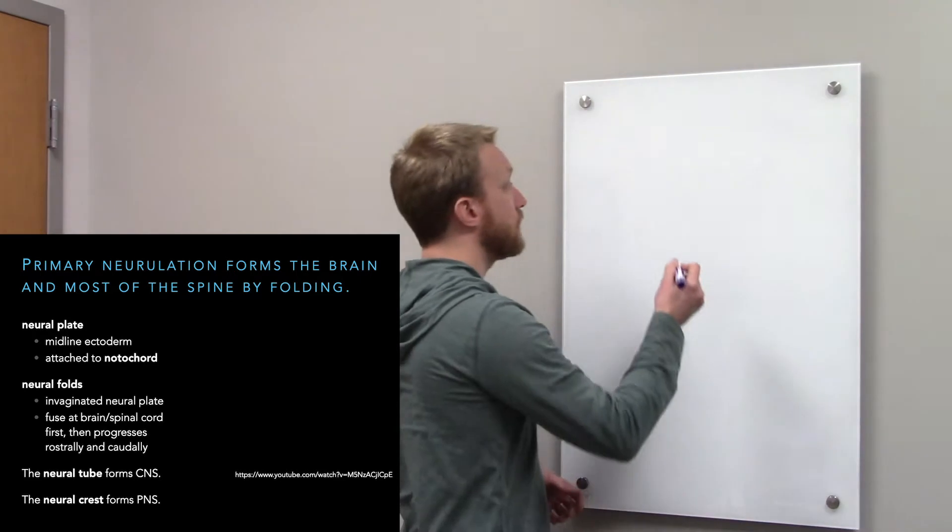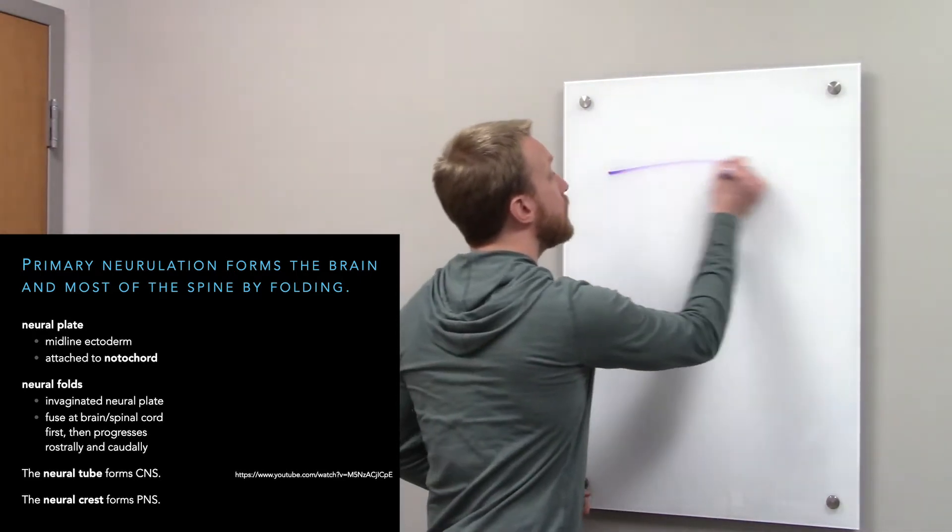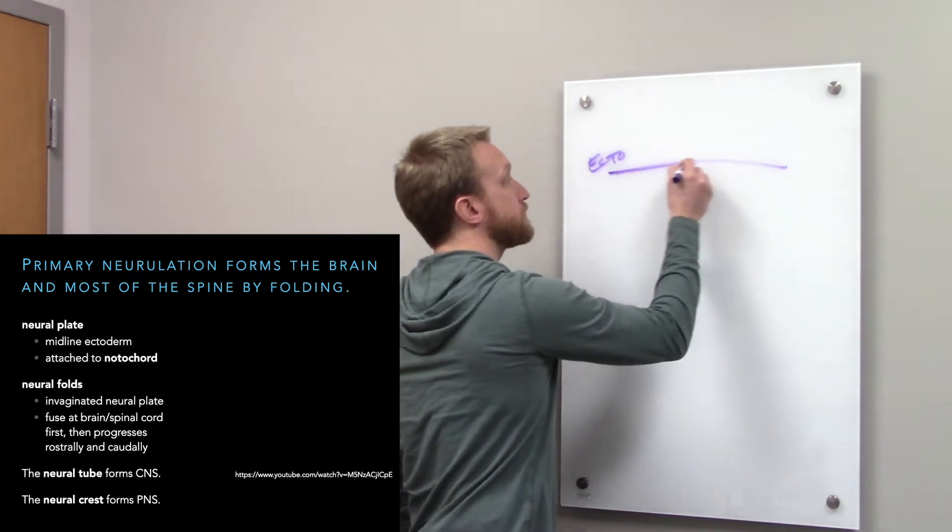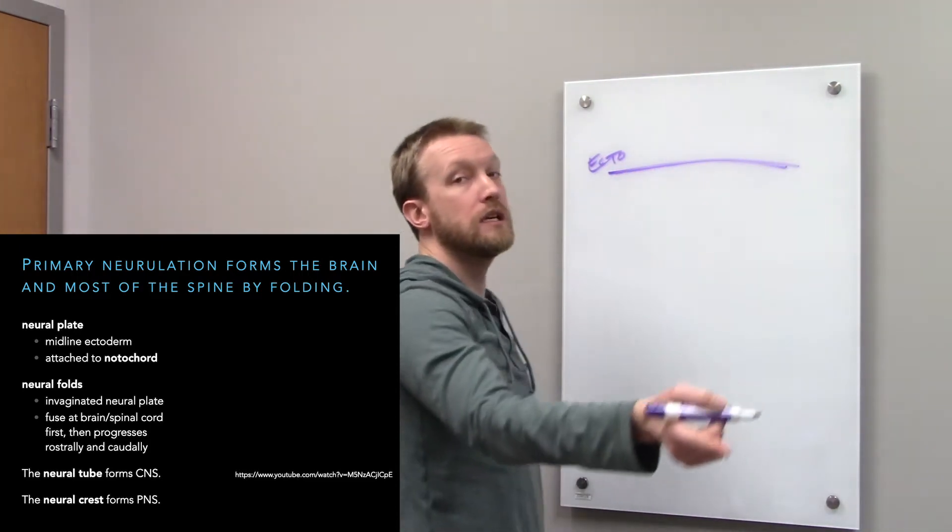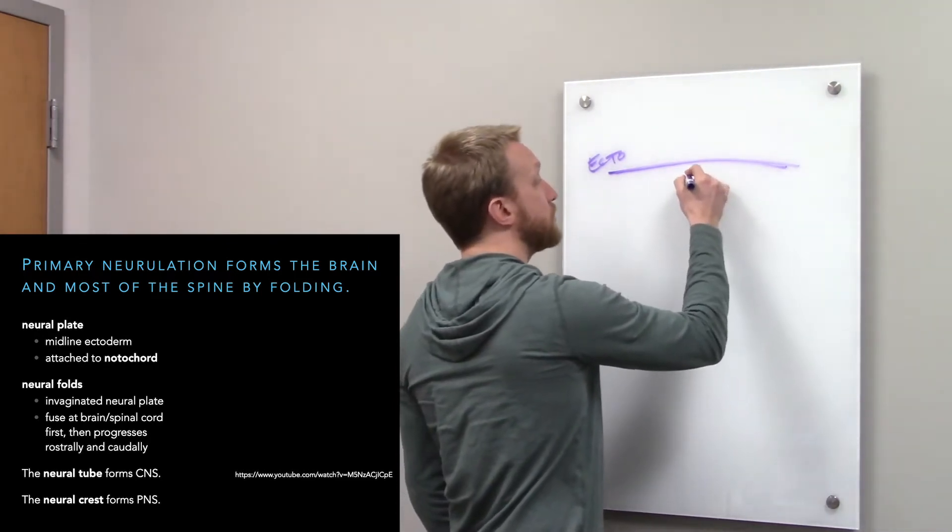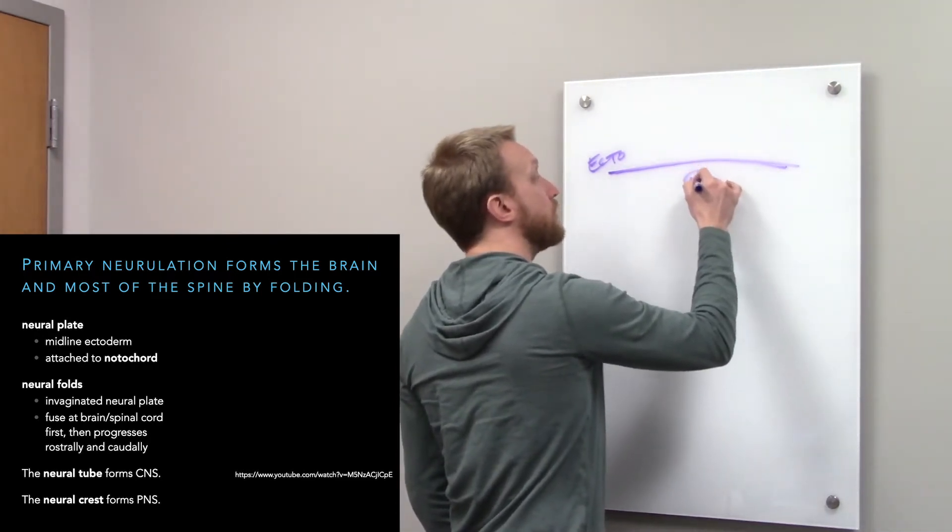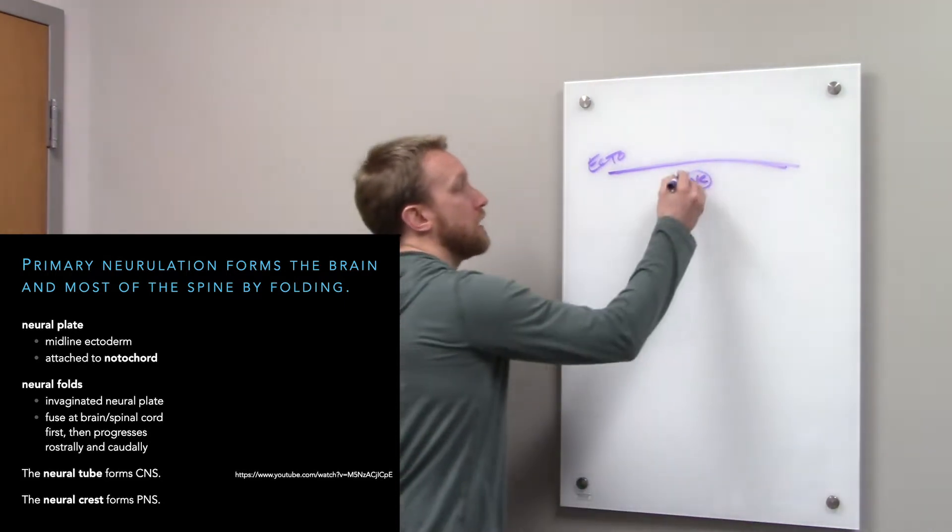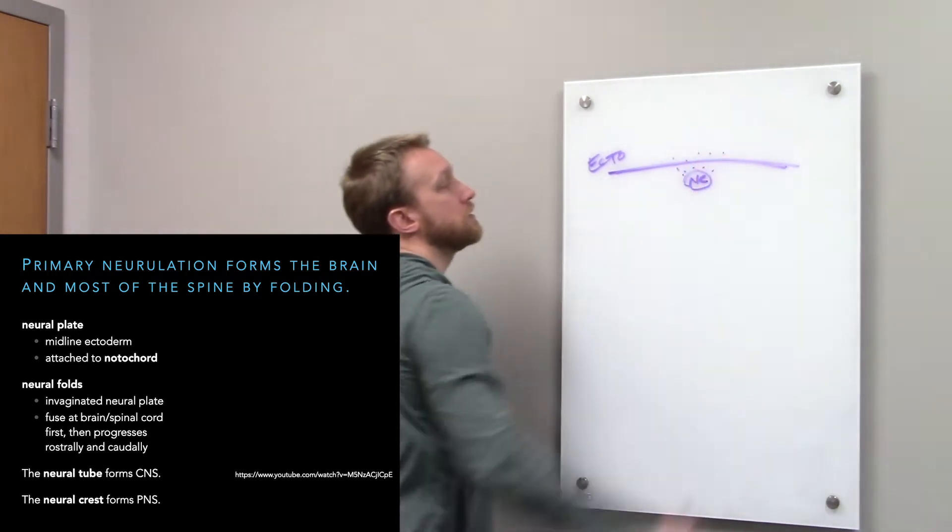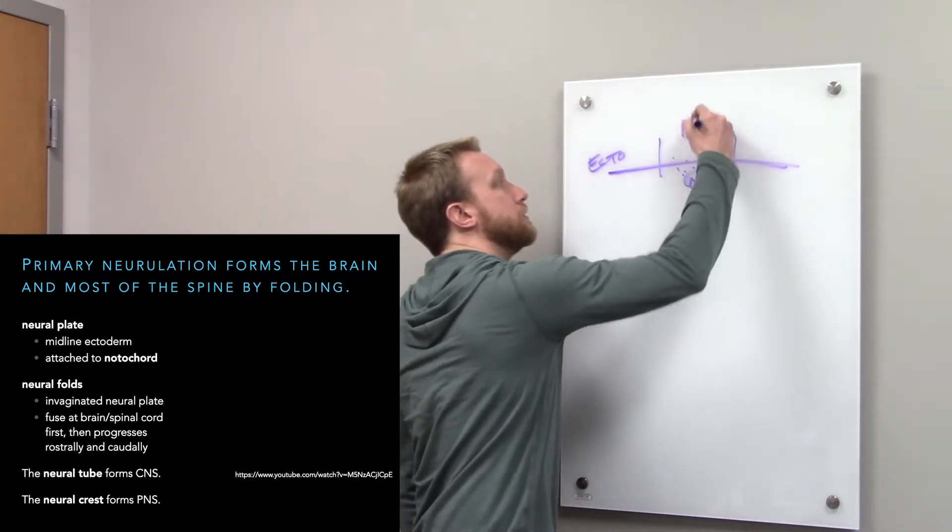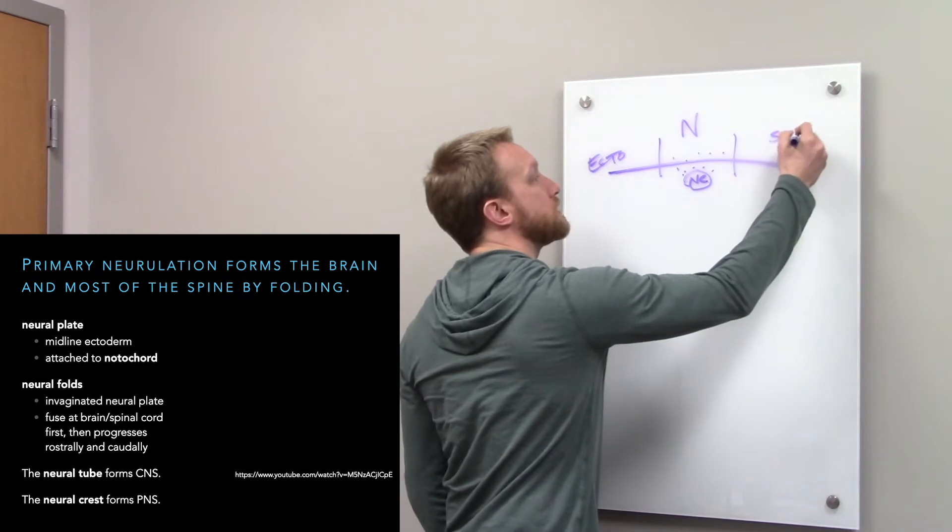Let's see this in cross section. The ectoderm makes not only our skin, but the nervous system. How does it know what part to make the nervous system? The mesoderm has this structure called the notochord, and that tells the overlying tissue you're going to be future neurons. So the midline structure forms the nervous system, the rest forms the skin.